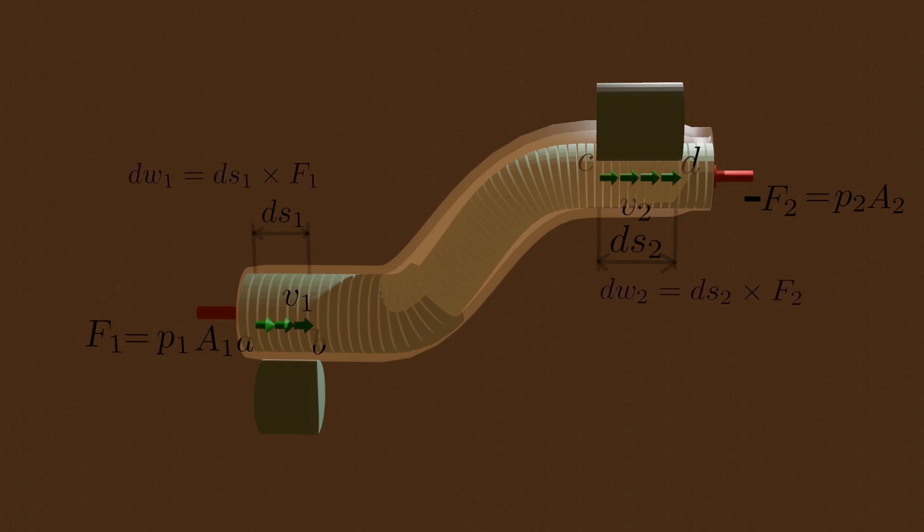The network DW done on the element by the surrounding fluid during this displacement is the sum of individual work done.